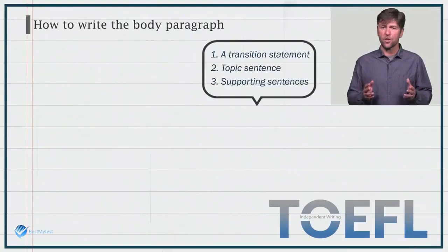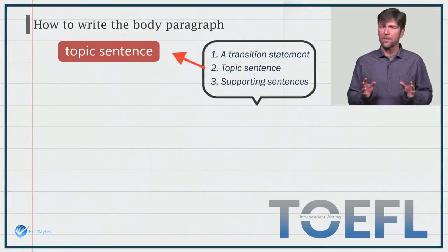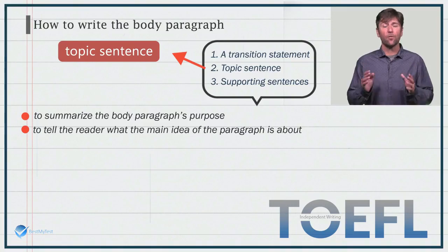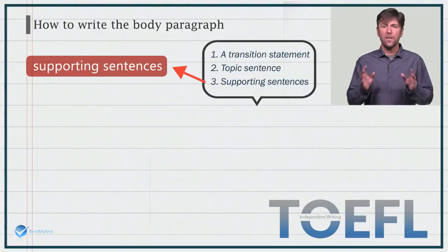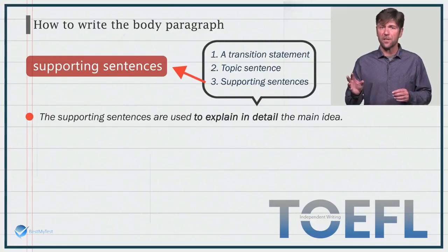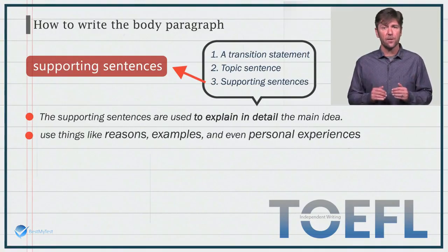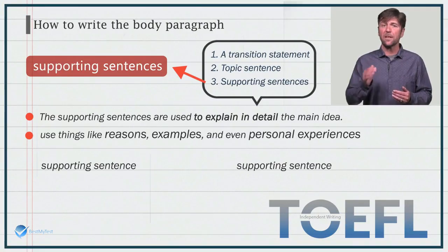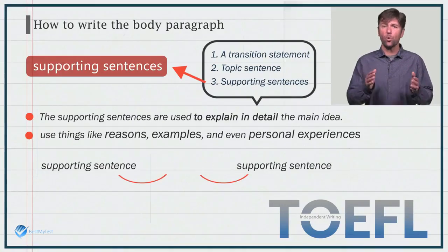After the transition comes the topic sentence. The topic sentence will summarize the body paragraph's purpose — it's meant to tell the reader what the main idea of the paragraph is about. Finally, you'll need to write the supporting sentences. These supporting sentences are used to explain in detail the main idea. The supporting sentences need to fully explain the topic sentence using anything to help the reader understand. You can use things like reasons, examples, or even personal experiences. Since there should be more than one supporting sentence in each body paragraph, remember to use transitions to connect your ideas between supporting sentences.